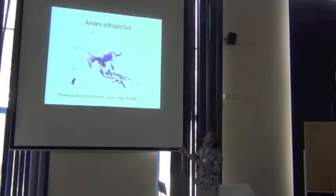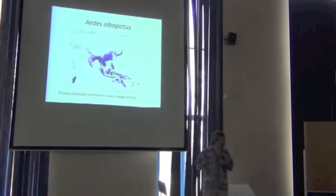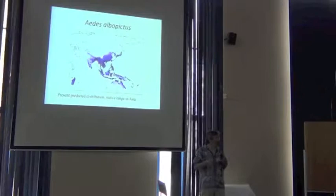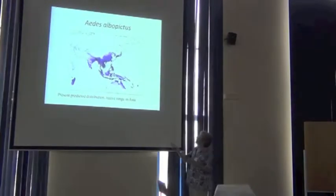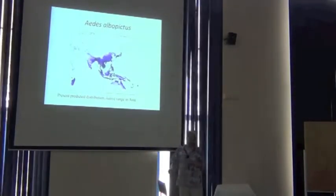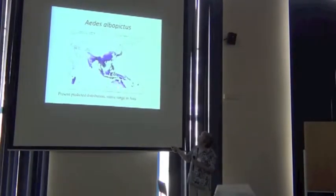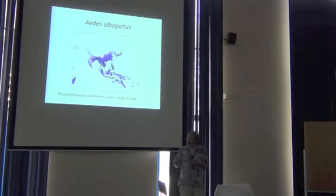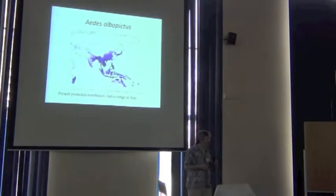And so when you see dark purple, those are areas that are reconstructed by the model as highly suitable, or as Richard would put it, highly similar in environmental terms to these points where the species is known. And the white areas are places that are environmentally very different, and putatively not within the niche.